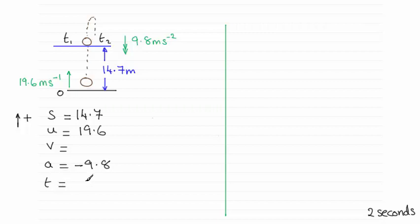The time when it's at 14.7 meters, that's what we want to find. So what kind of equation are we going to use that groups together s, u, a, and t, one that leaves out v? Well, that equation is s equals ut plus a half at squared. So you should be familiar with all those equations.